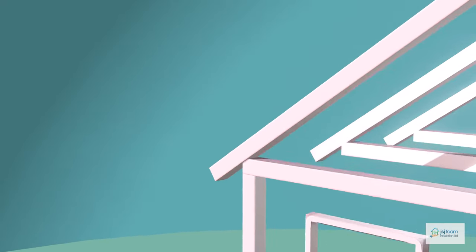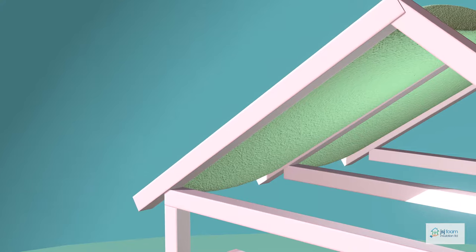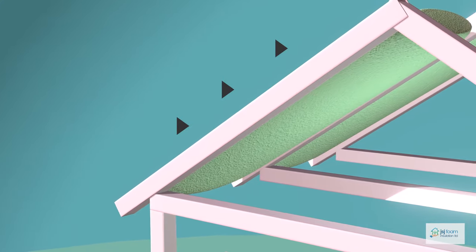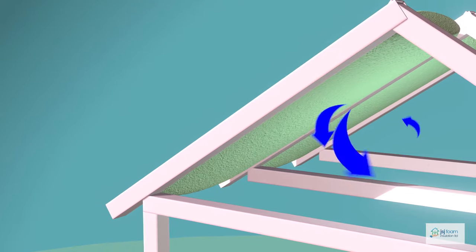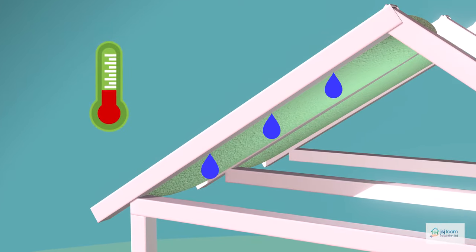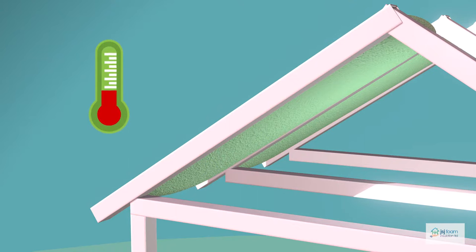Applying Isene spray foam insulation to your loft space at rafter level super insulates your roof, so that what was previously cold air space instead becomes a similar temperature to the rest of your home, reducing the risk of condensation or mold.